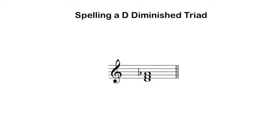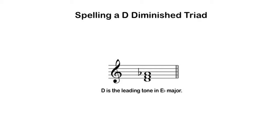I know that diminished triads show up as the leading tone triad in a major key. I can treat the root of the chord as a leading tone, go up a minor second to find the key note of a major key — in this case E-flat — and then apply the key signature for E-flat major, which consists of three flats: B-flat, E-flat, and A-flat, to the pitches in the triad. That will get me the same diminished triad.